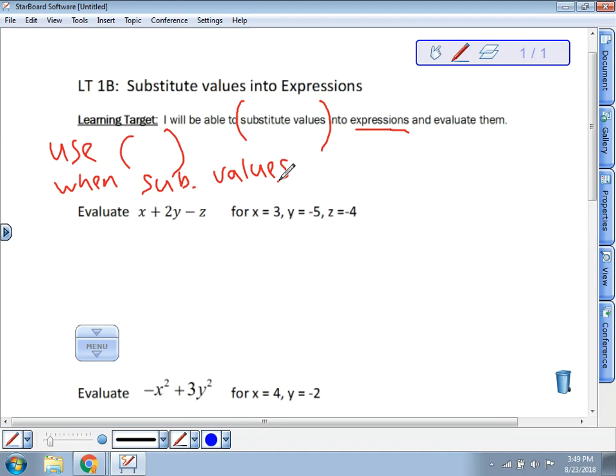Let's get right to an example because we know what substitution method is and how we're going to use these expressions. Here's our expression right here: x + 2y - z. Now it says for when x equals 3, so whenever you see an x, you're going to put in a 3. When y is negative 5, so whenever I see a y, I'm going to put in a negative 5. And it tells me that z is negative 4, so wherever I put a z, I'm going to put in that negative 4.